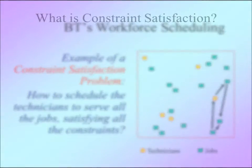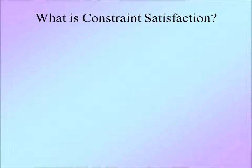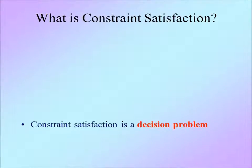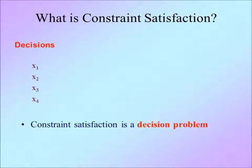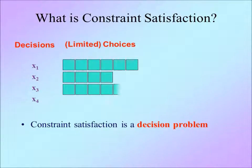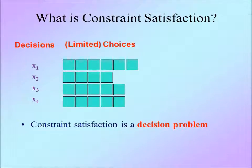What exactly is a constraint satisfaction problem? It is a decision problem. You have a number of decisions to make. In the above example, you have to decide which technician should do which job at what time. For each decision, there are limited choices. The exact way to define the decisions and choices for the above example is non-trivial. It is a task that requires training.